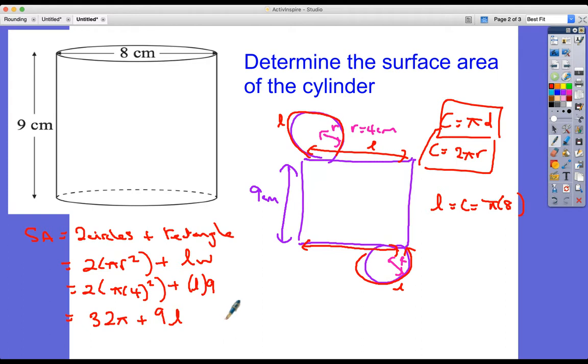So now we can just go in and improve on this. So it's going to be equal to 32π + 9 × 8π. And so that's the width, the 9, times by the length, which is the circumference, which is πd, or 8π, plus the 32π, which is the area of two circles.